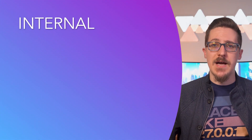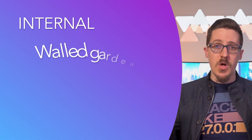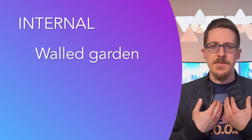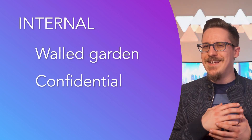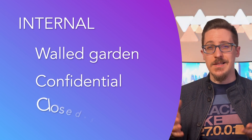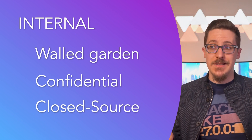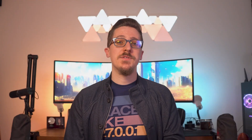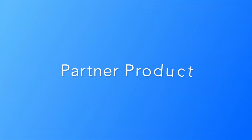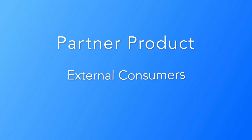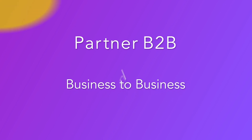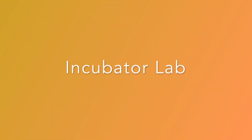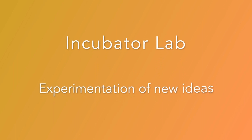Internal ones are exactly as they sound — they're targeted for use within the digital walls of Discover. These often contain sensitive information you wouldn't want leaked outside the company, and collaborative development on those APIs remains within the company. Then our external ones are split into three groups: Partner Product, those meant to be a product for external consumers or partners; Partner B2B, those for direct business-to-business usage; and Incubator/Lab, those for the incubation or experimentation of new ideas to test in the market.